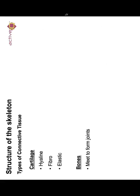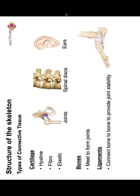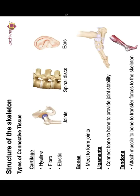Let's look at the structure of the skeleton. There are types of connective tissue you need to remember. We've got cartilage — hyaline cartilage, which will be found in joints; fibrocartilage, which can be found in the spinal discs; and elastic, which would be like in the ears. With the bones, it's really important to understand they meet to form joints. You have ligaments, which are connected bone to bone to provide stability and help connect the bones. And then tendons attach muscles to bone to transfer forces that are exerted on the skeleton.